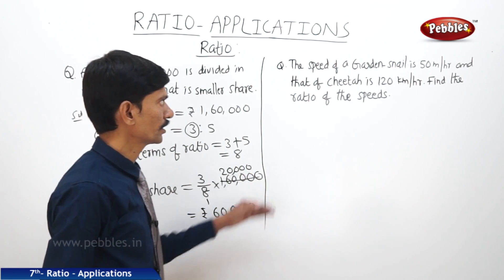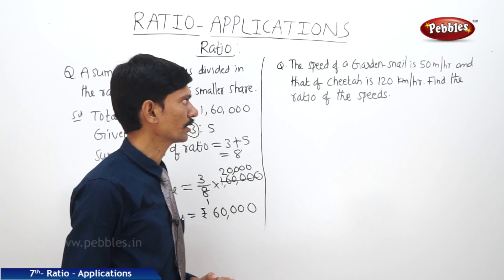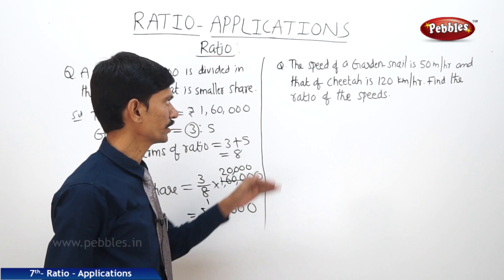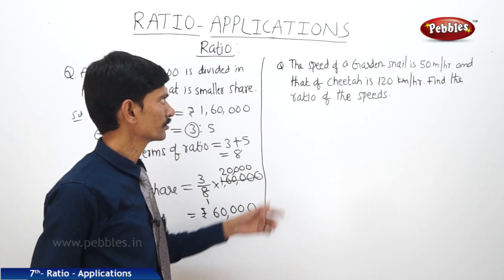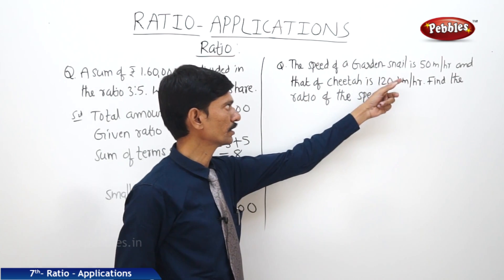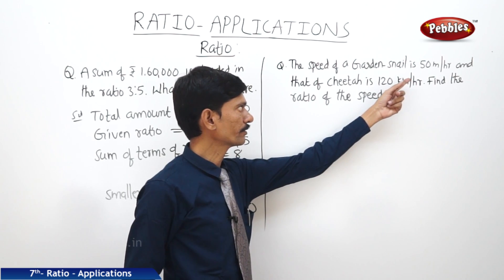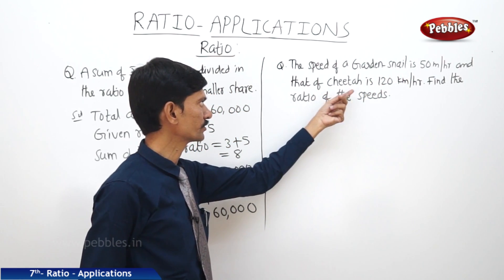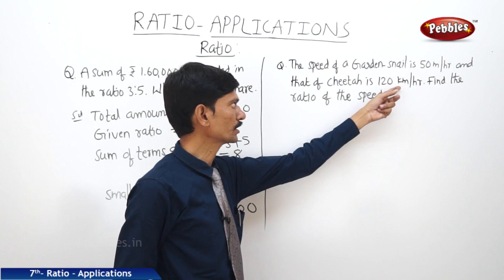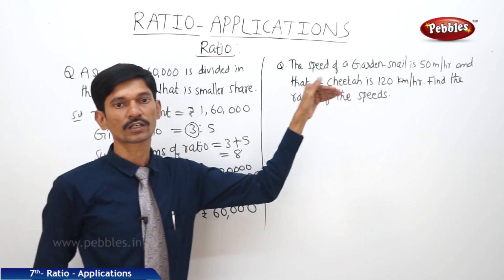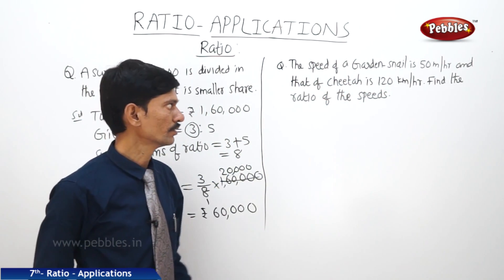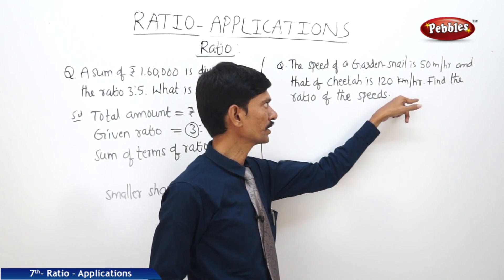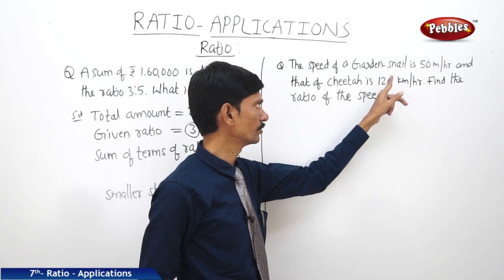Now the next question. The speed of a garden snail is 50 metres per hour and that of a cheetah is 120 kilometres per hour. Find the ratio of the speeds. But both speeds are not mentioned in the same units, so either we can convert 50 metres to kilometres or 120 kilometres to metres.